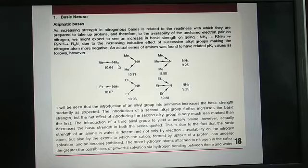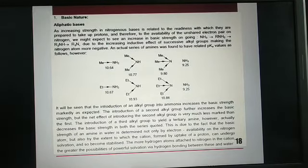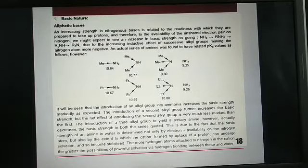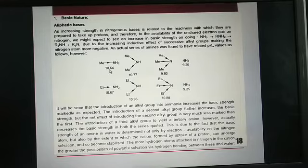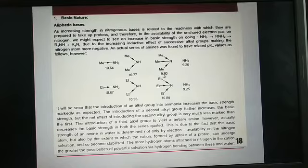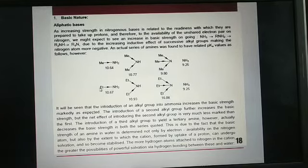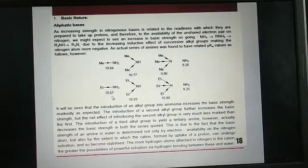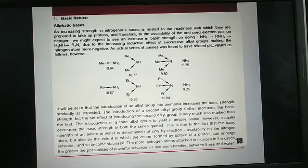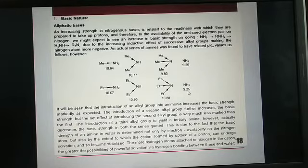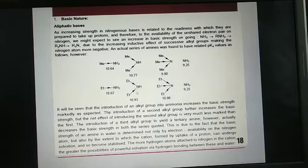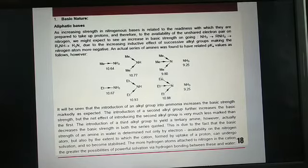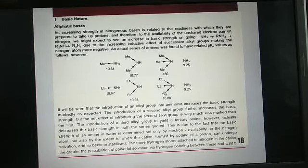But actual series of amines was found to have related pKa values. If we look into the values of basic strength, for primary amines it is 10.64, for secondary 10.77, tertiary 9.80. And if ethyl group is introduced, the value is 10.67 for primary, 10.93 for secondary, 10.88 for tertiary and 9.25 for ammonia. So here the highest value is for when 2 ethyl groups are introduced, and a little difference is noticed when 3 ethyl groups are introduced.